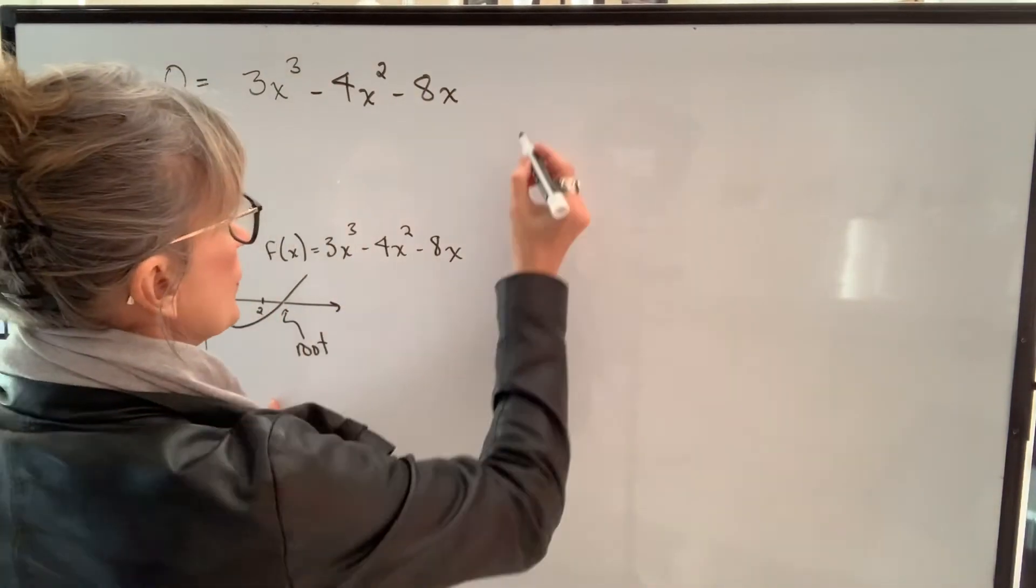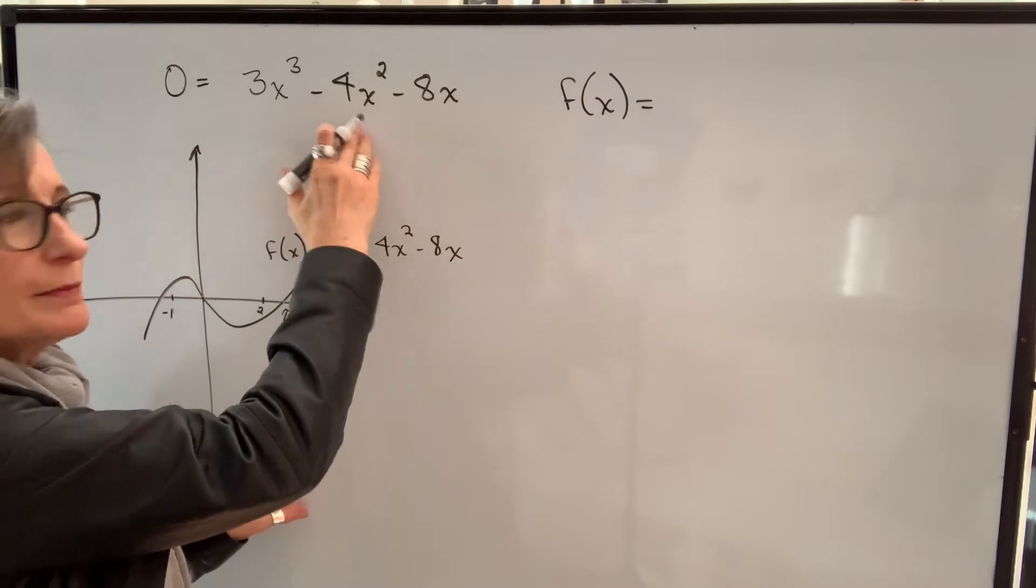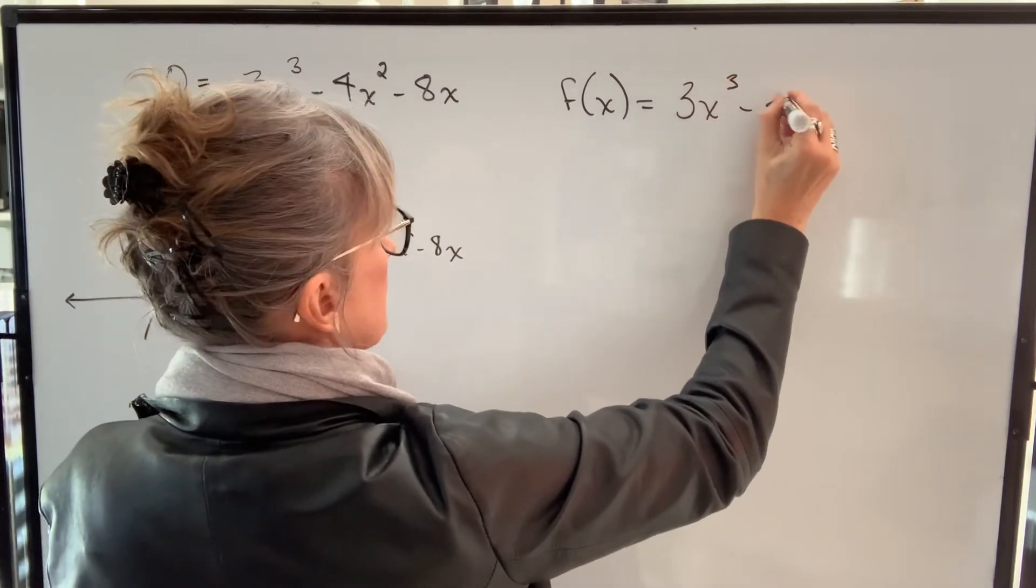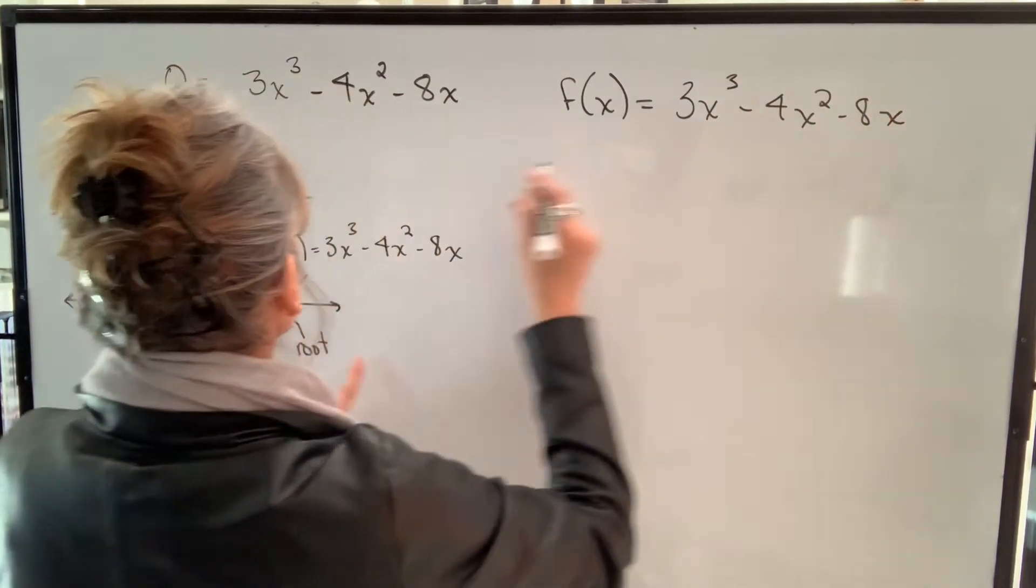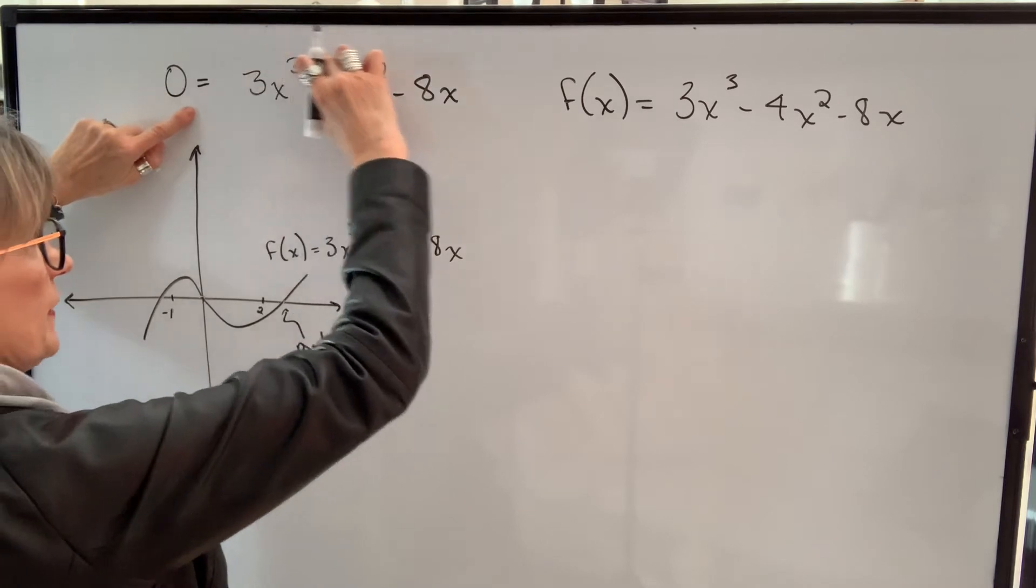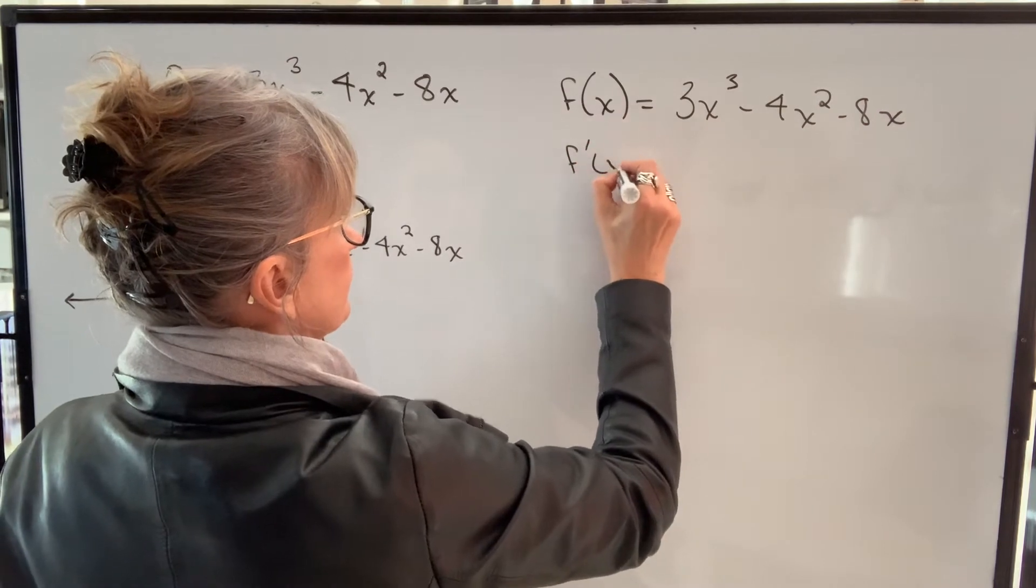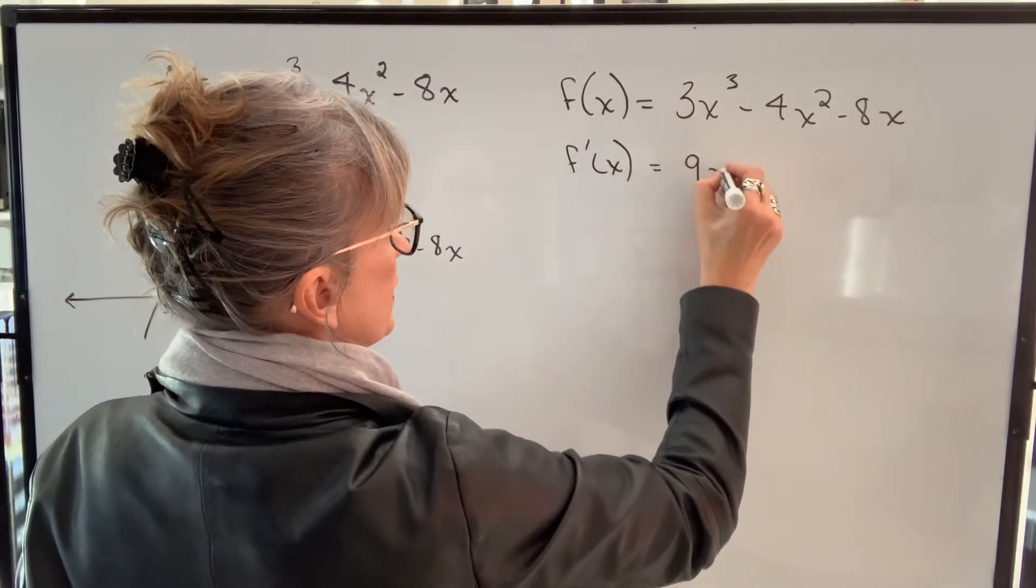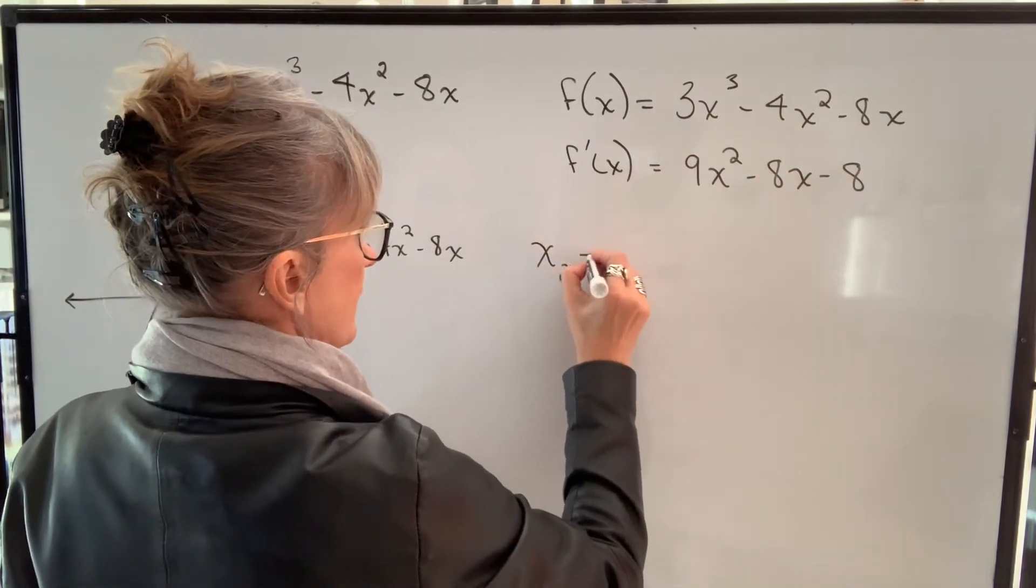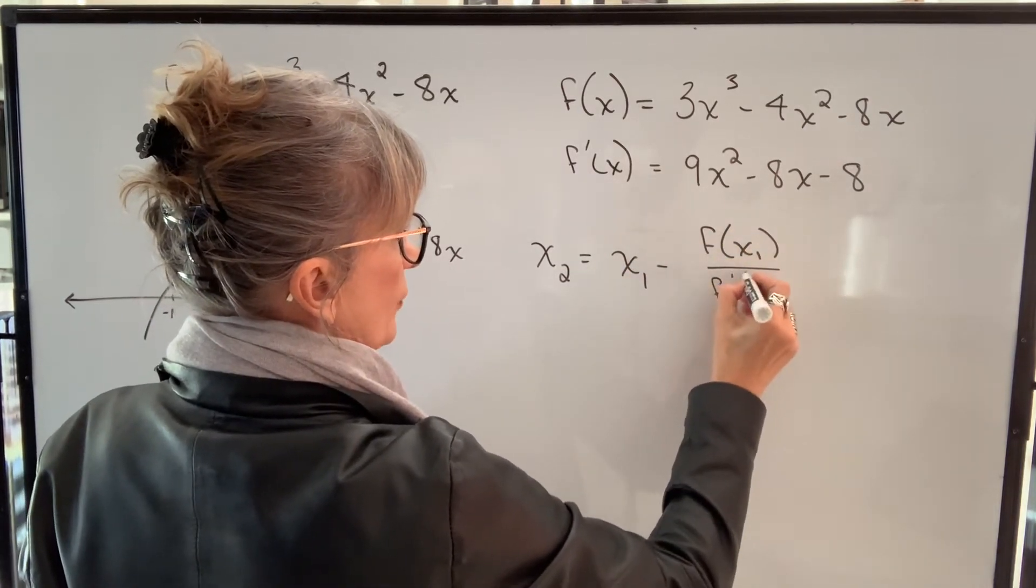So what I need to do first, I've defined f(x) as this function. When you're doing this with an equation, you have to make it equal to zero before you can define that as your f(x). So for example, if this was a two, you would have to move it over and make it equal to zero, and then your function would be that minus two. So just be aware of that. In my formula, I need the derivative. So I find the derivative of this, which would be 9x² - 8x - 8. My formula says that x2 will equal x1 minus f(x1) divided by f'(x1).